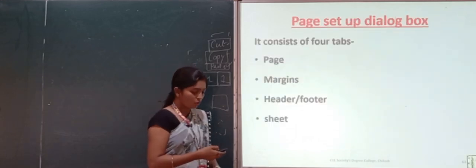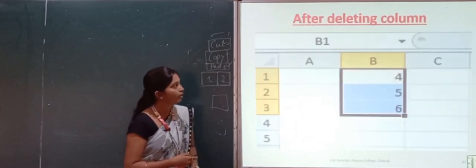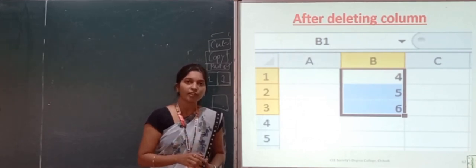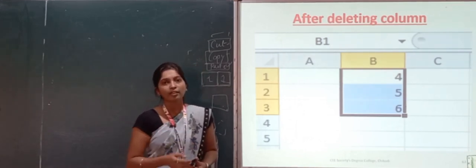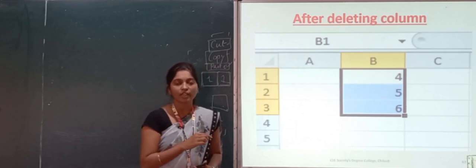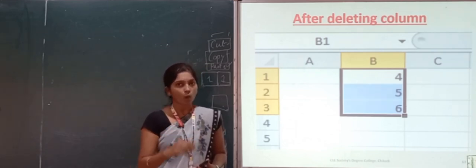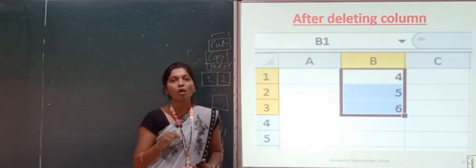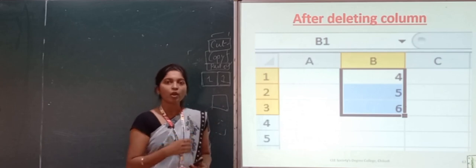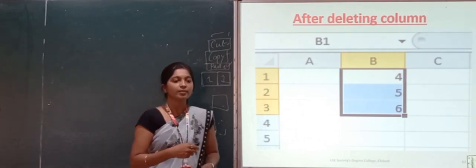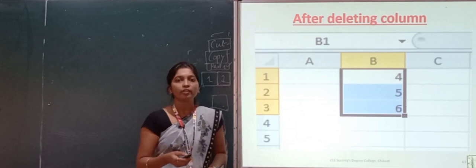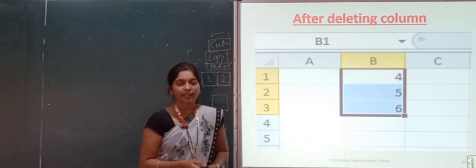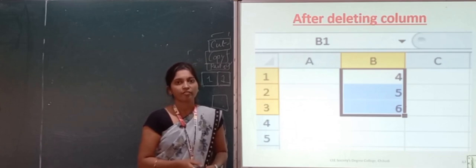So, to summarize what we have studied: how to close a particular MS Excel worksheet, how to add rows and columns in a worksheet, and how to delete particular cells, rows, or columns in a worksheet. We have discussed all these things and in further classes we will take up another topic. Till then, stay home, stay safe. Thank you.